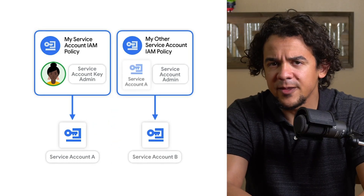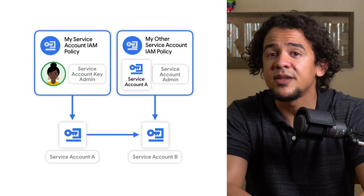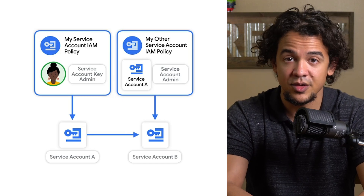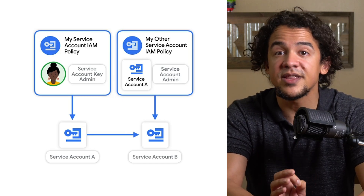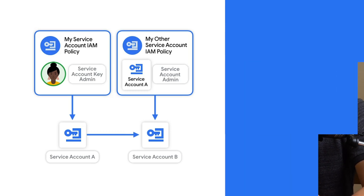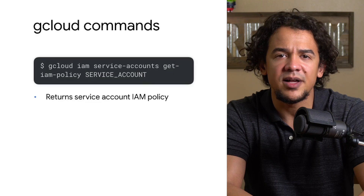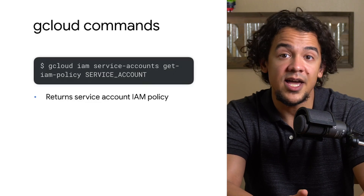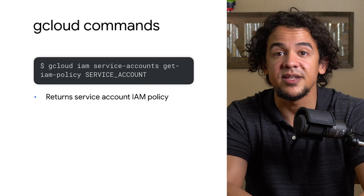It's also worth noting that service accounts can be granted these roles on other service accounts. So take into account instances where a user can have indirect access to a service account through another service account. You can view a service account IAM policy with gcloud iam service-accounts get-iam-policy, followed by a service account. By understanding the roles associated with service accounts and doing a thorough review of your IAM policies to apply the principle of least privilege, you'll be taking major steps towards maintaining a safe and secure project.